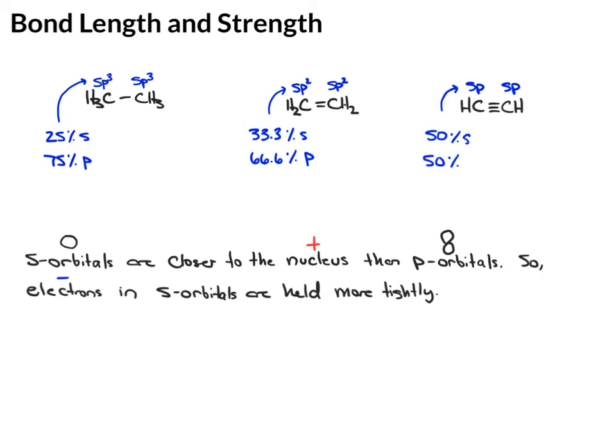So now applying this to the hybridization, more s-character means more tightly held electrons. That also means stronger, shorter bonds.